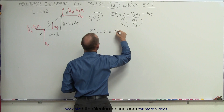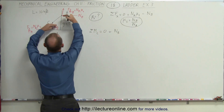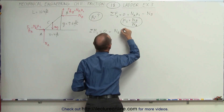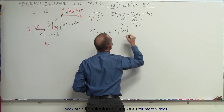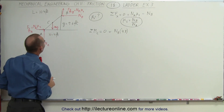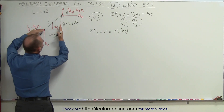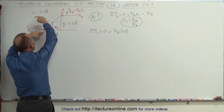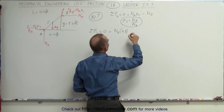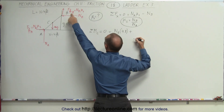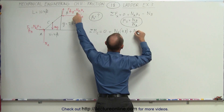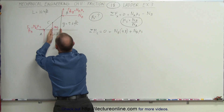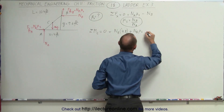Nb acts in a counterclockwise direction, so it's positive: Nb times half the distance from there to there — if the total distance is 9.6, half is 4.8 feet — giving Nb × 4.8. The friction force at B is Nb × μs and also gives a counterclockwise moment, so we add Nb × μs × 2 feet (half of 4 feet).